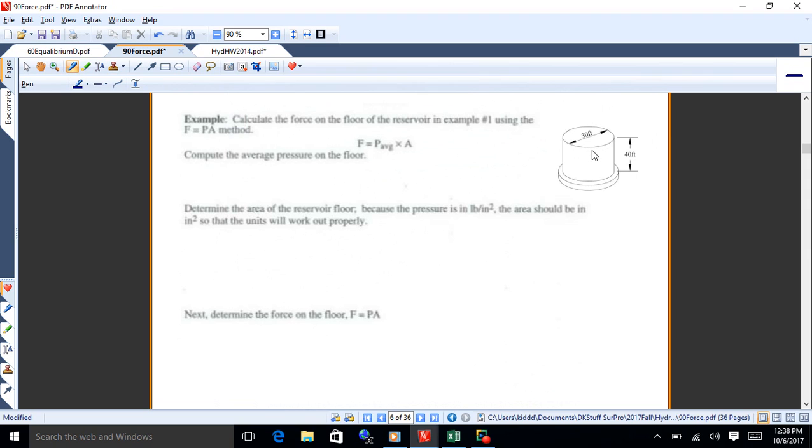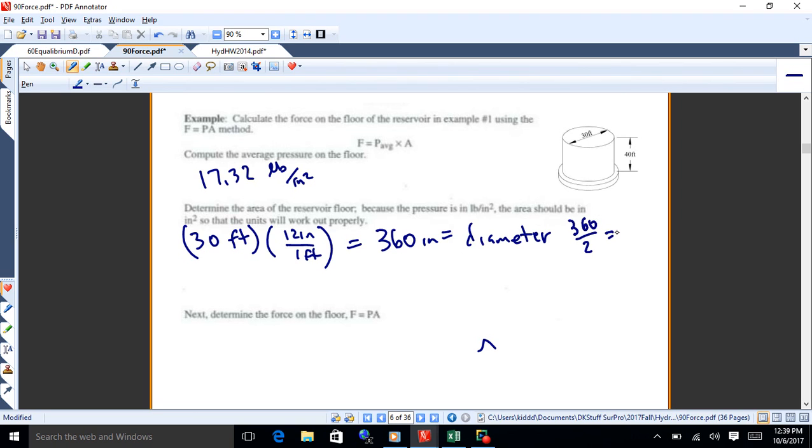Now we want to find the area at the bottom of the tank. The one thing on this to remember is we've got that diameter in feet. So we've got 17.32 psi, which is pounds per inch squared. And then we've got 30 feet. Now be careful because that's feet and we've got psi, pounds per square inch. So we've got 12 inches per foot. When we multiply that through, we get 360 inches, and that's equal to the diameter. So 360 over 2 is 180 inches, and that's the radius.